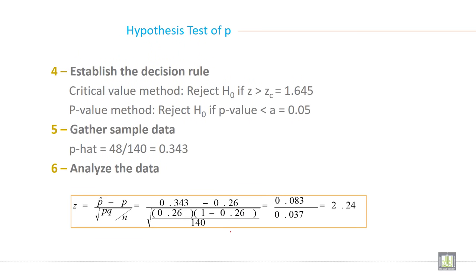Then step 4, establish the decision rule. Critical value method: reject the null hypothesis if Z calculated is greater than Z critical 1.645 because it is one tail at 5% level of significance. P-value method: reject the null hypothesis if p-value is less than alpha or 0.05.